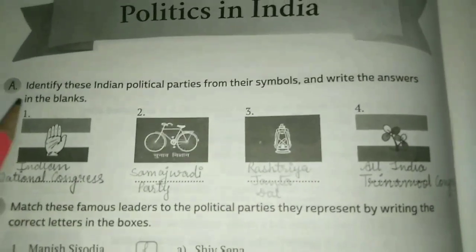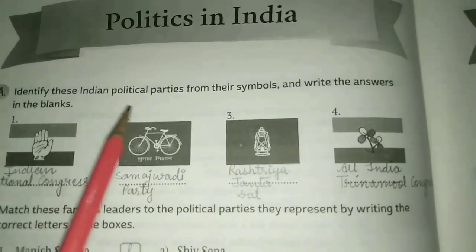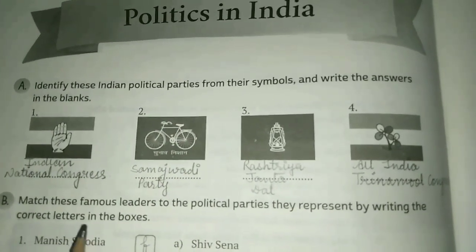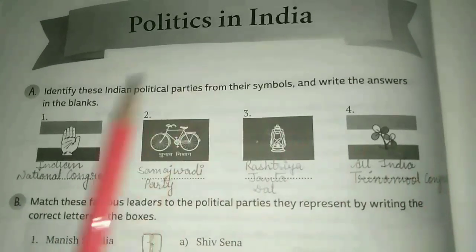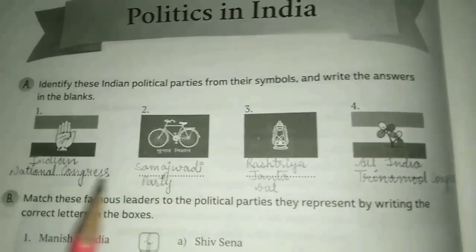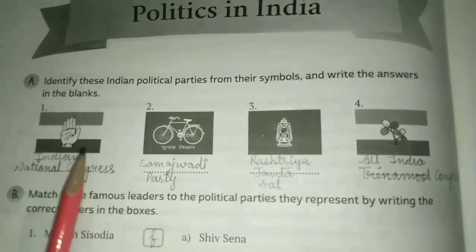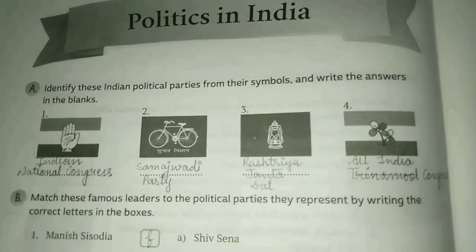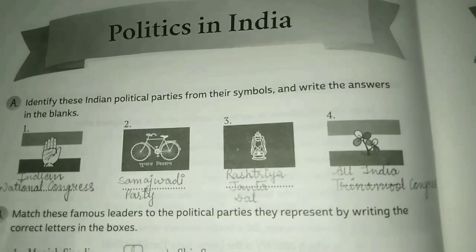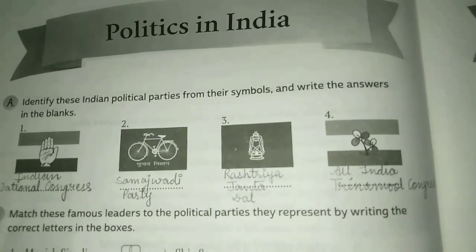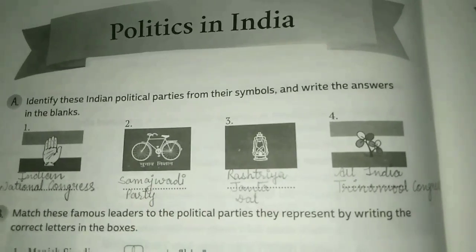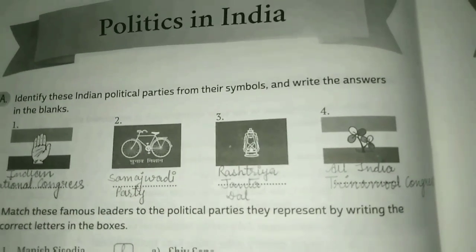Here is Lesson: Politics in India. Read the question first — identify these Indian political parties from their symbols and write the answers in the blanks. Four symbols are given; you have to identify these political parties from their symbol. The first symbol is of the Indian National Congress — it was founded in 1885 and was the first modern nationalist movement to emerge in the British Empire in Asia and Africa.